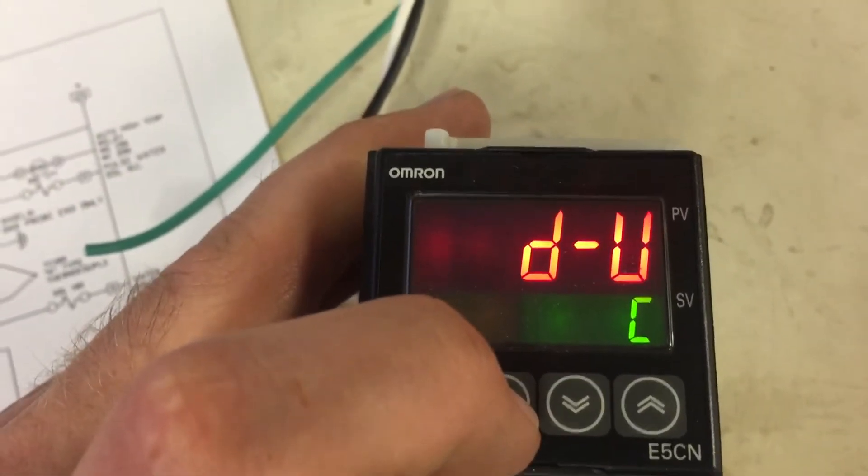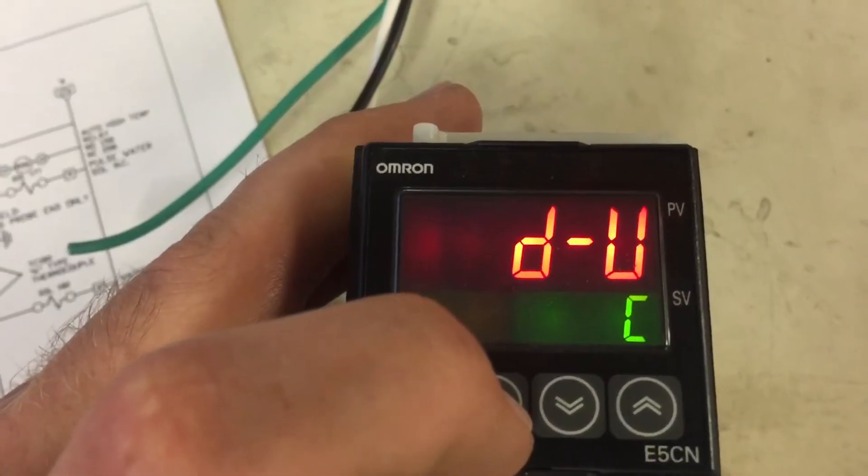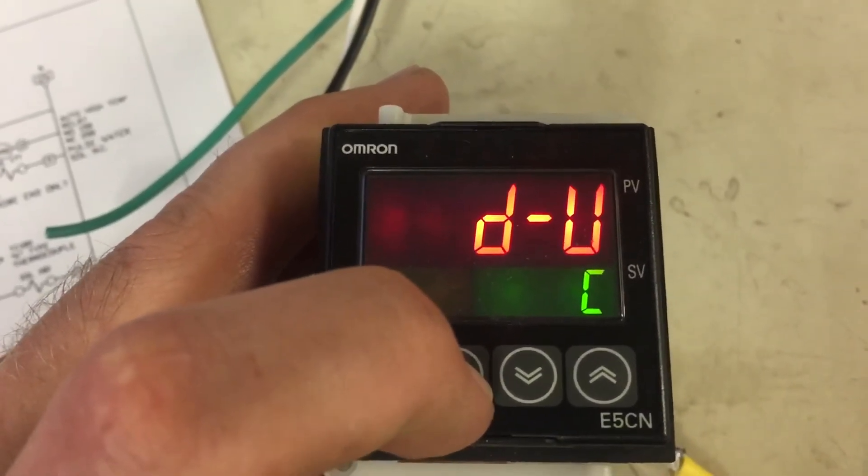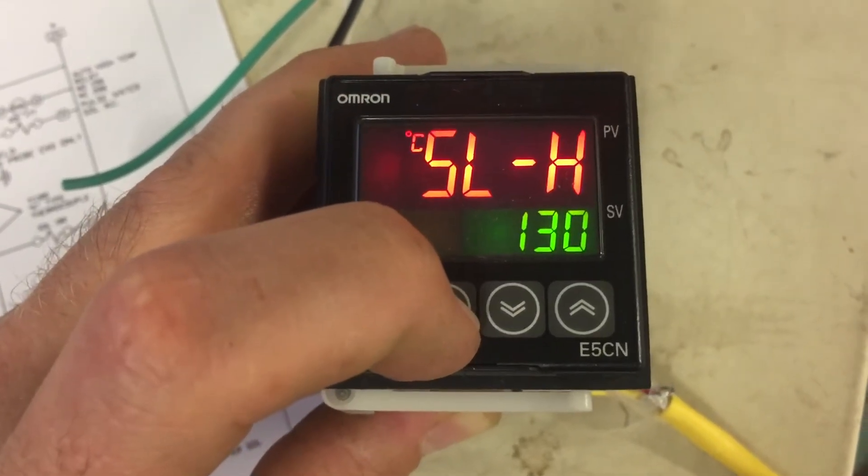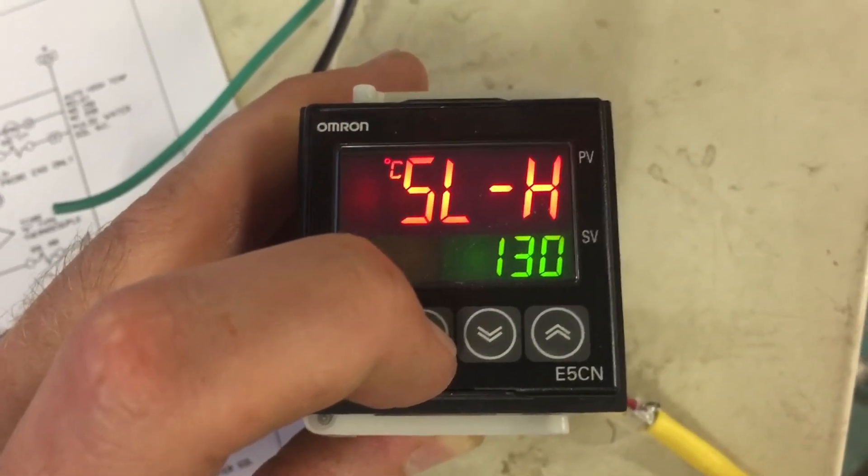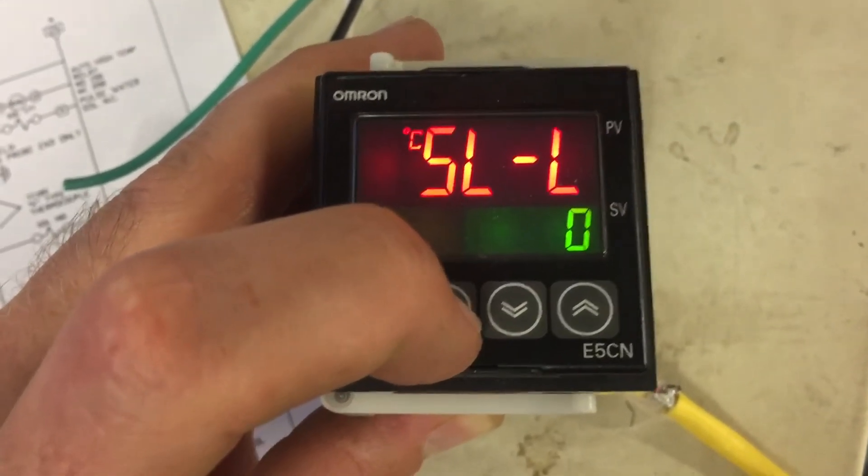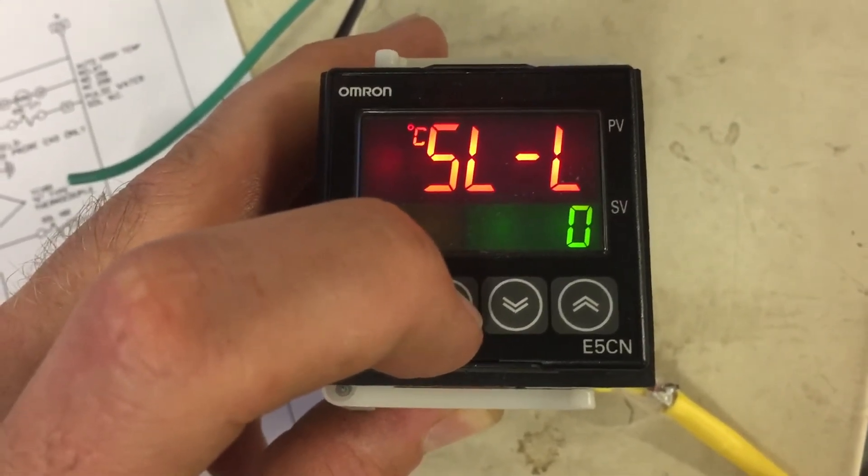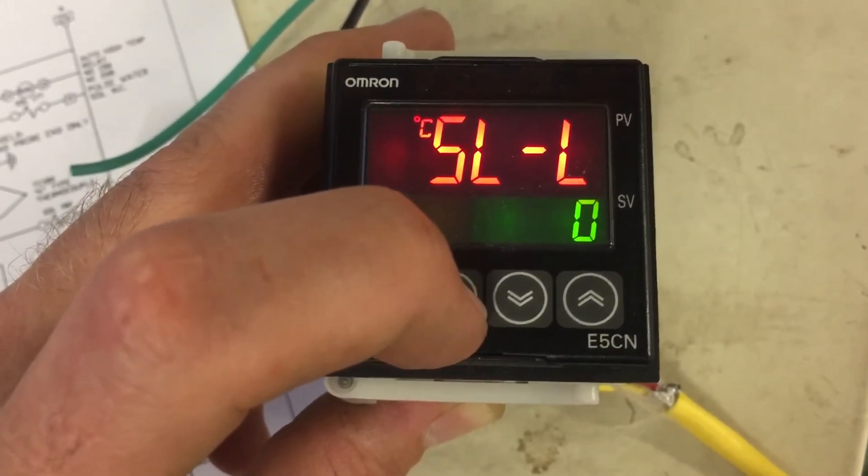This is the unit type. What it is, is Celsius normally for Canadian units and Fahrenheit for United States and Mexico. The set limit high for Celsius is 130. Set limit low. On demonstration purposes, I've set this at 0, but normally it's set at 100 so that the operator doesn't flood the unit.